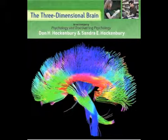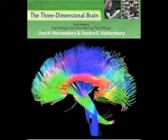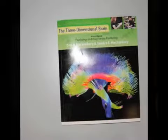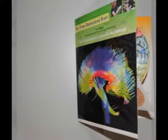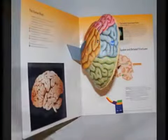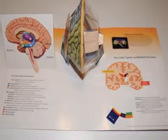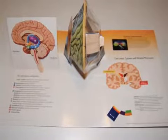To announce a unique addition to the Hockenberry & Hockenberry Psychology Supplements Package: a three-dimensional brain model that is available to be bound for free with any version of the text. Unfolding to allow students to study the positioning of brain structures from different angles, the three-dimensional brain model is a groundbreaking study tool that will help students at all levels understand the brain's physiology and its relation to human behavior.